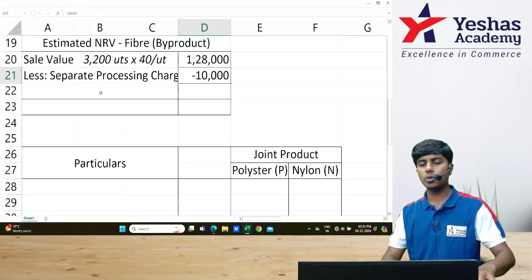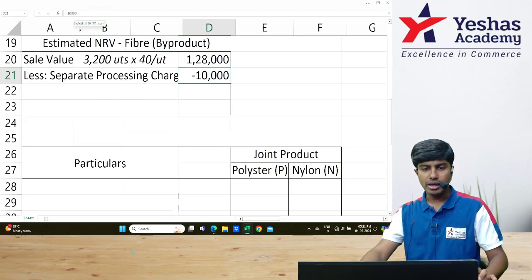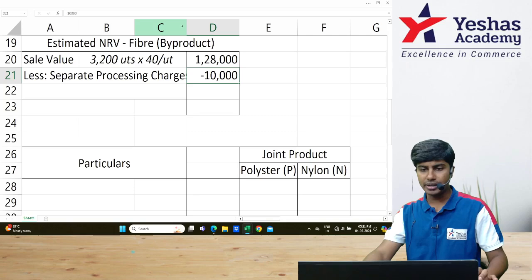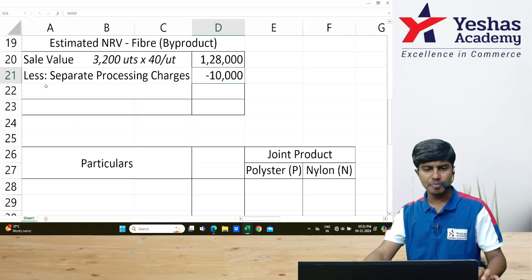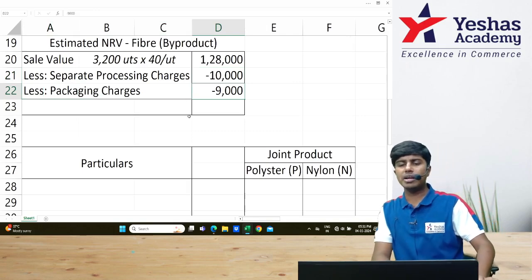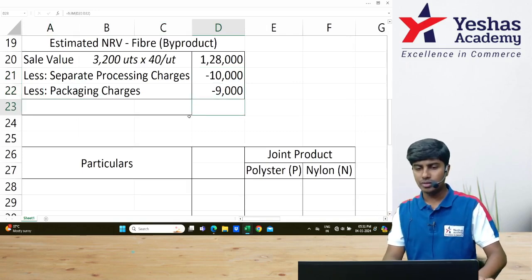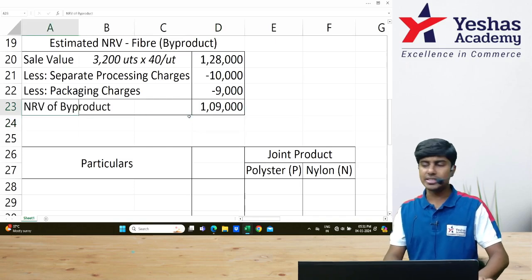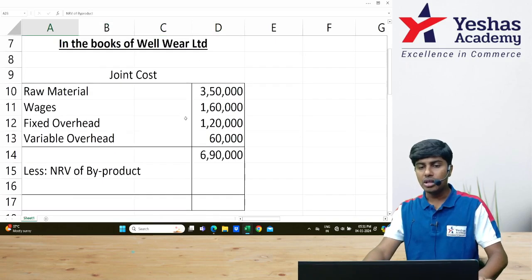I will deduct it from ₹1,28,000. I will write separate processing charges ₹10,000 and also write the next expense, packaging charges of ₹9,000. ₹1,28,000 minus ₹10,000 minus ₹9,000. ₹1,09,000 is the NRV of byproduct. This ₹1,09,000 I will deduct from the joint cost.